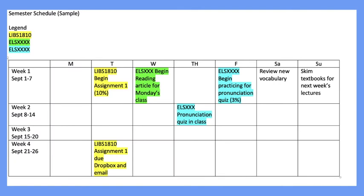Here is a short example of what a semester schedule might look like created in Word. In this sample, the person has chosen Monday through Sunday. You can see that in week one the student decided on Tuesday to begin assignment one, which is worth 10%. In week four, assignment one is due in the Dropbox and the email is also due. The student has also noted when to begin reading articles and when to begin pronunciation practice. On the weekends it shows what needs to be done for the coming week. Your schedule will probably be more detailed, and you'll notice you can color code different courses if you'd like.